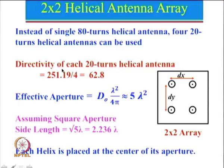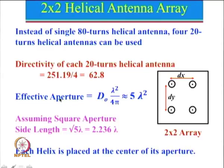We know that directivity is directly proportional to n. So if the number of turns are reduced, directivity will also reduce by the same factor — it will come to 62.8. Now when we want to put these helical antennas in an array, it is very important where we place them — whether the spacing between them should be very small or very large. One has to do some calculation, and for that we can use the concept that directivity is given by 4π times A divided by lambda squared. From that we can find the effective aperture, which is approximately 5 lambda squared when substituting D₀ = 62.8.